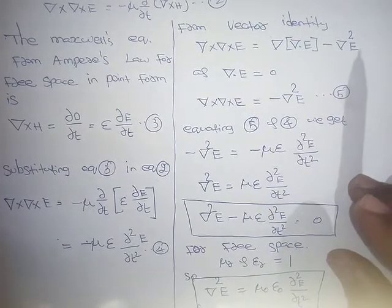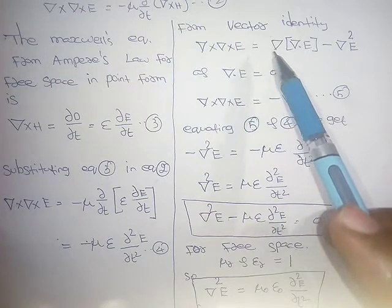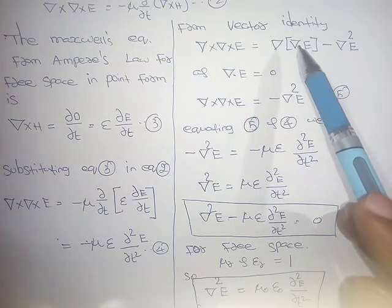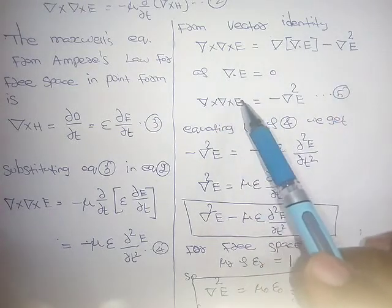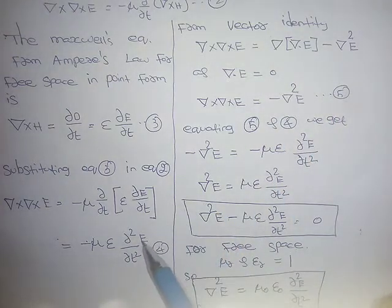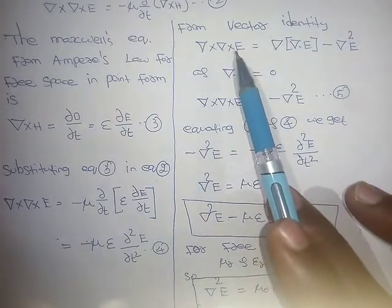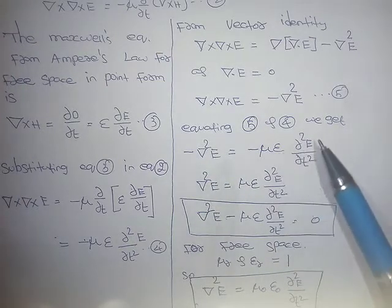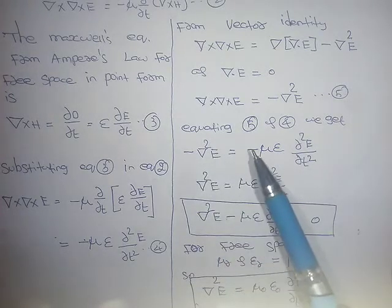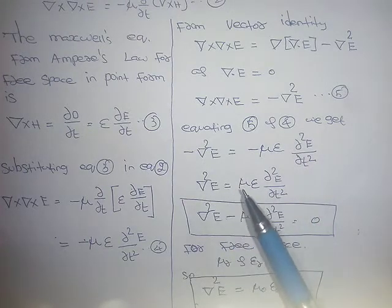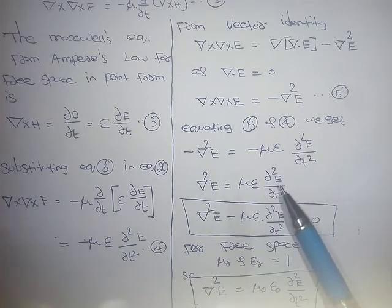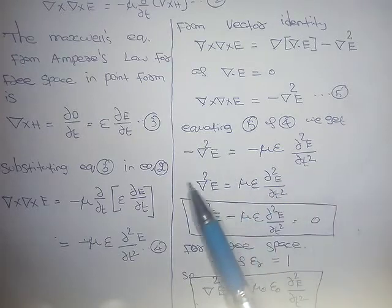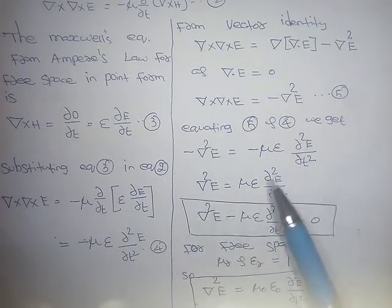Using the vector identity: del cross del cross E equals del(del·E) minus del²E. Since del·E equals zero in free space, the first term vanishes, giving del cross del cross E equals minus del²E. Equating: minus del²E equals minus με d²E/dt², and cancelling the negatives: del²E equals με d²E/dt², or del²E minus με d²E/dt² equals zero. This is the wave equation for free space in terms of the electric field.